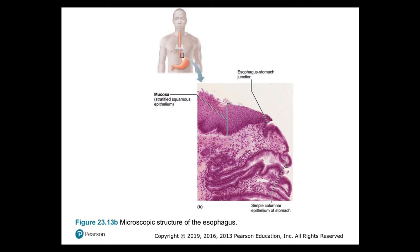In figure 23.13B, again the microscopic structure of the esophagus — this time at the esophagus-stomach junction. You can see the mucosa, which is stratified squamous epithelium, and then the simple columnar epithelium of the stomach.